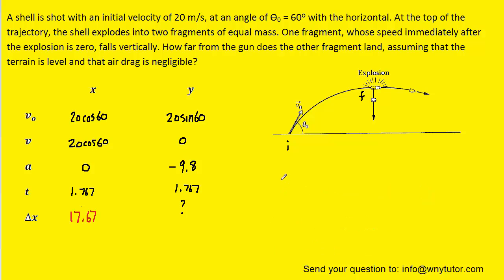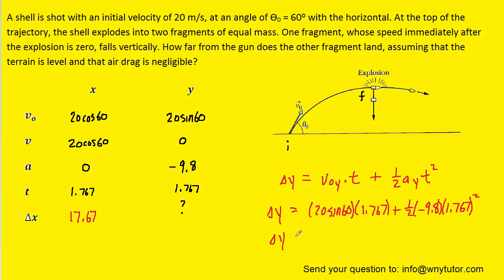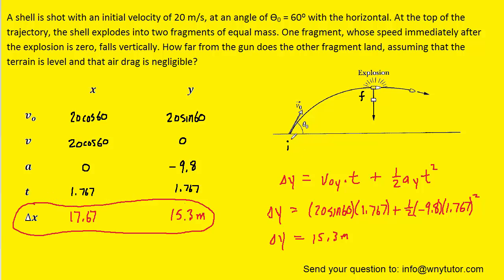We'll fill that into the table, then make the same computation in the y direction using the known values, and we get roughly 15.3 meters. We'll fill that into the table as well. Now we're going to hold on to those coordinates for a little bit later in the problem — horizontally the projectile has traveled 17.67 meters, and vertically it's traveled 15.3 meters. The next phase of our problem will involve conserving momentum.